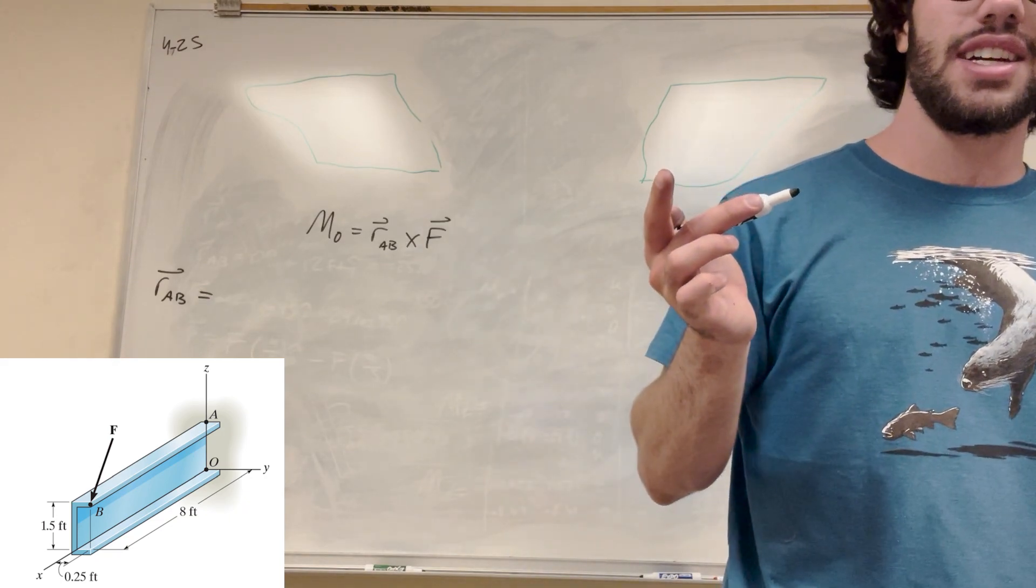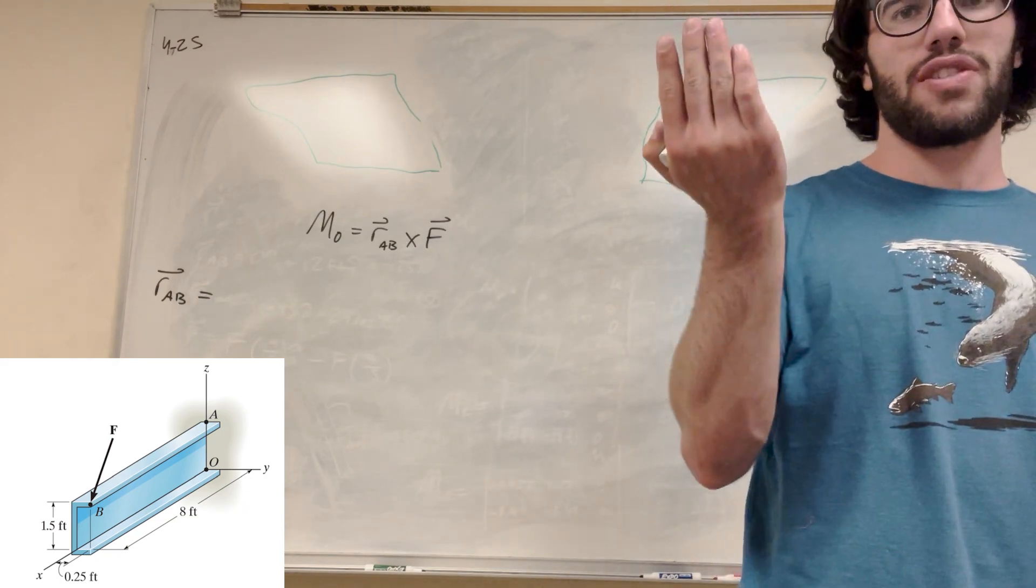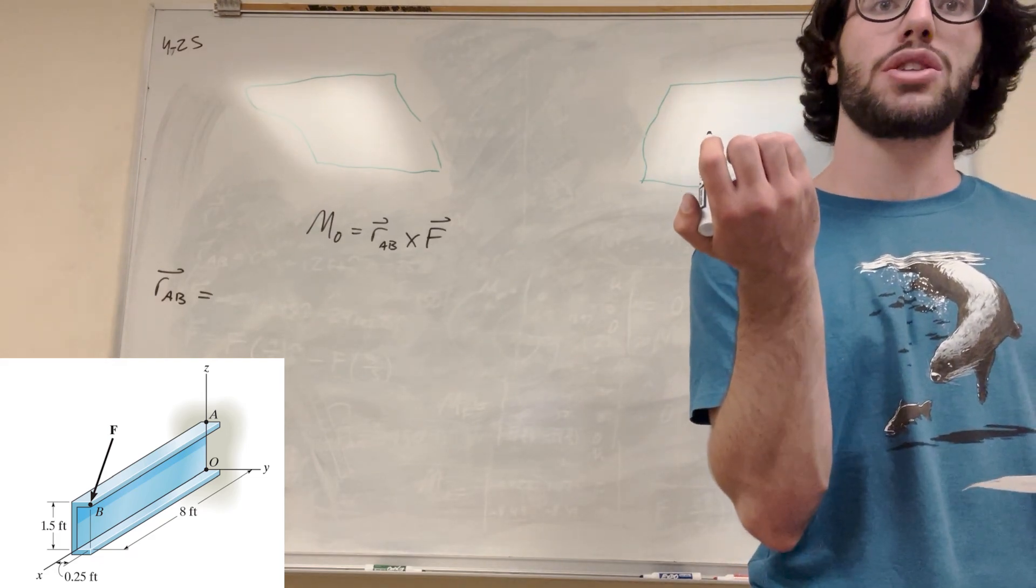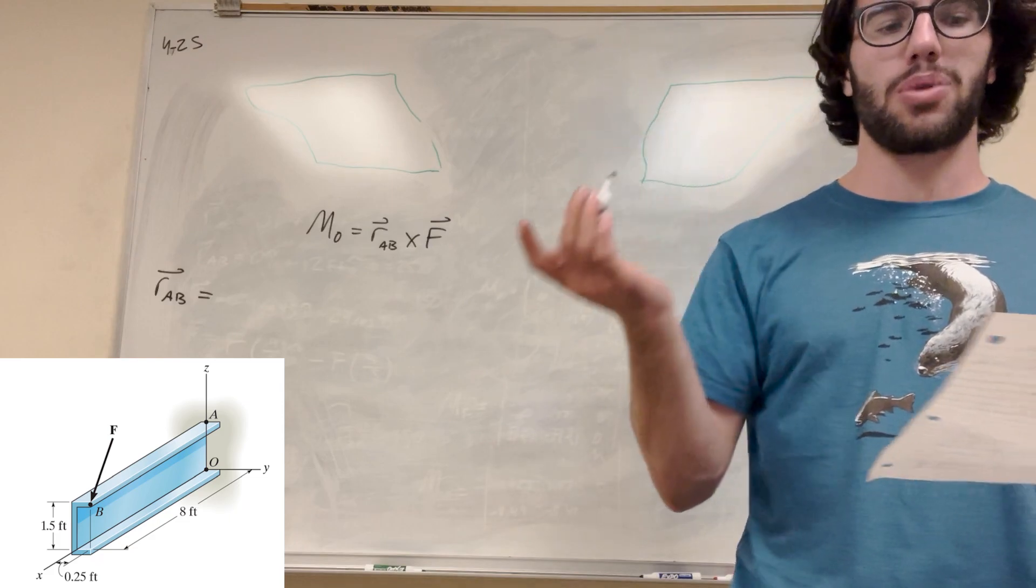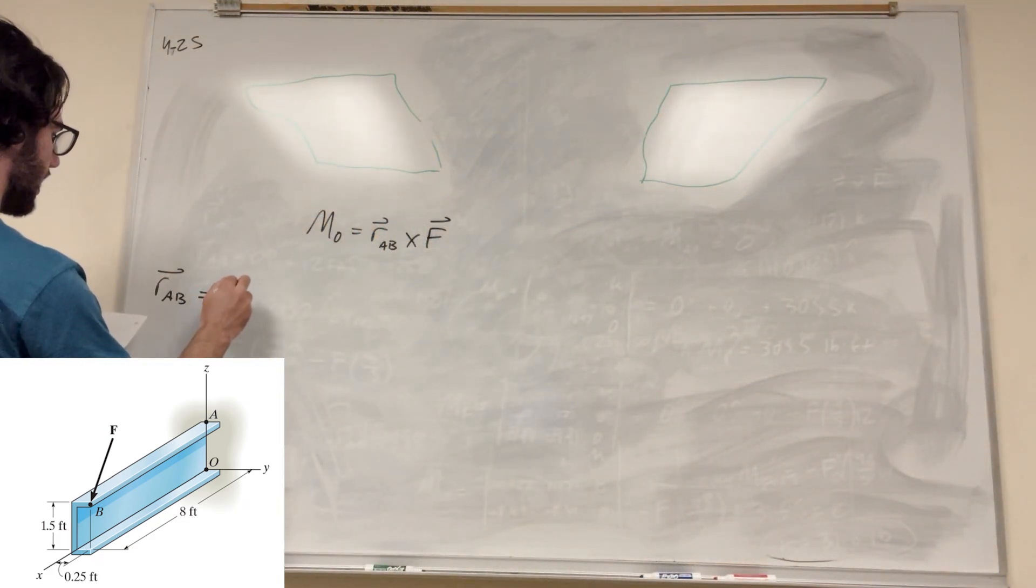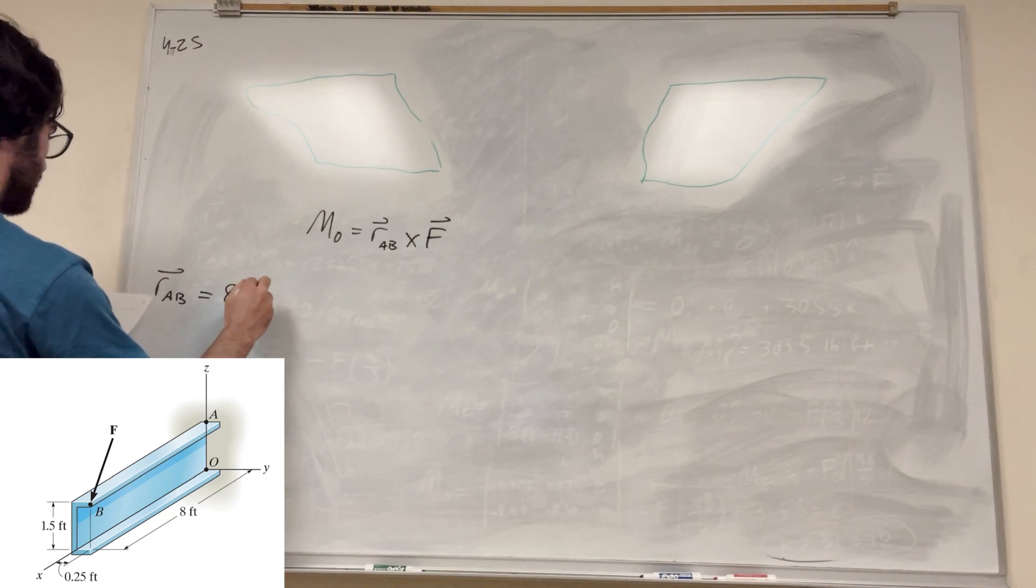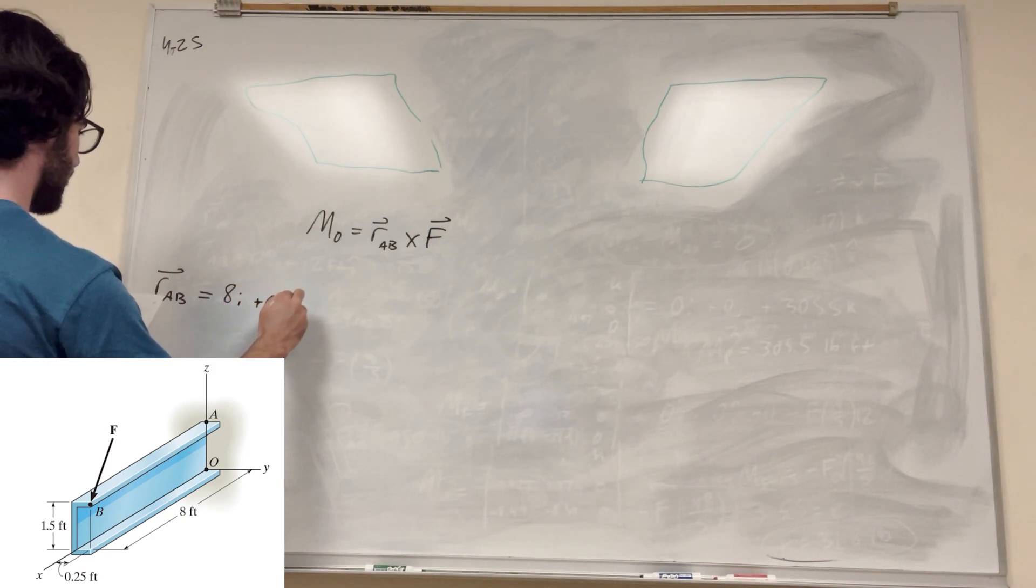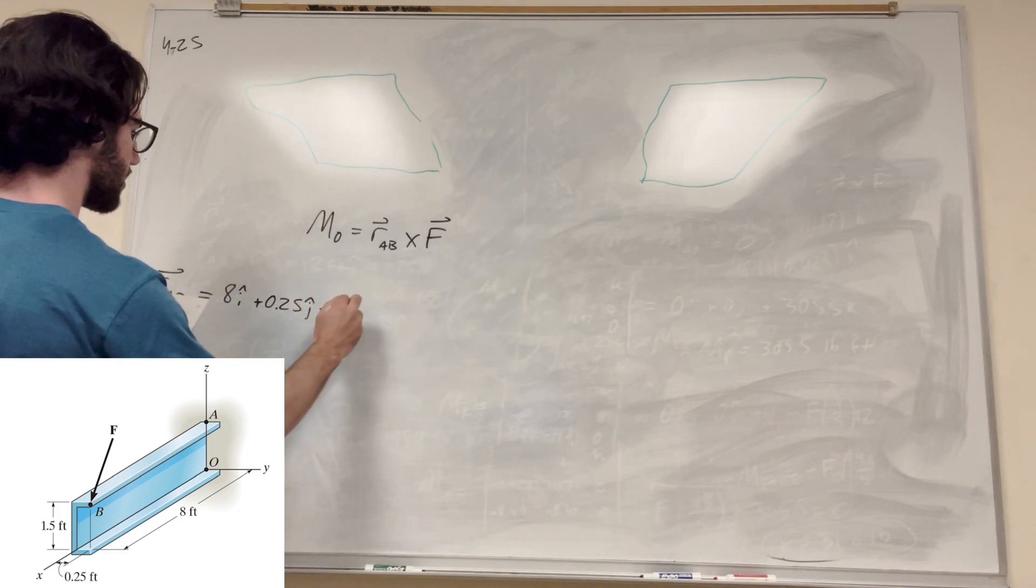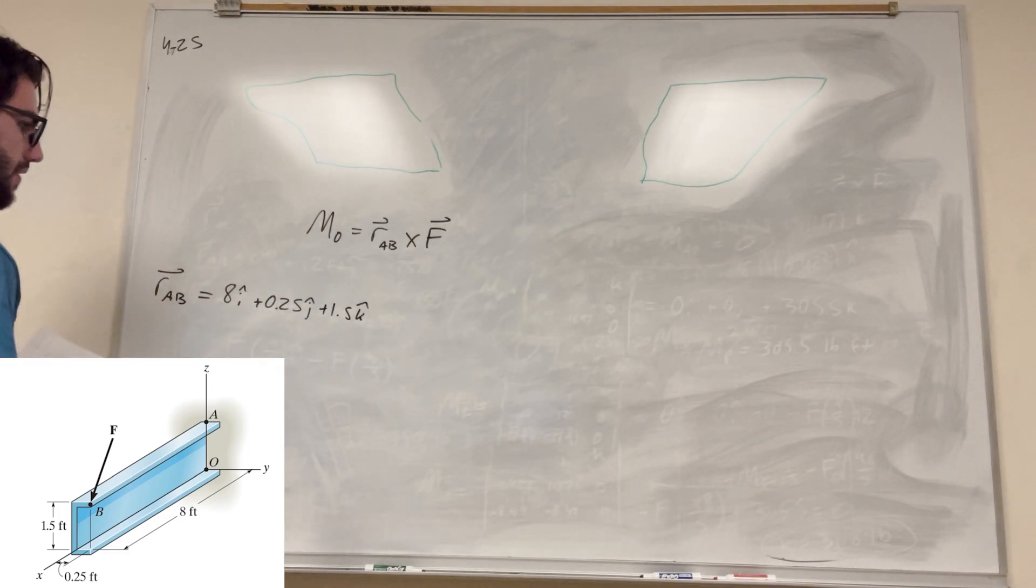It goes 8 feet in the x direction, it goes positive y 0.25 feet, and then it goes up in the z direction 1.5 feet. So it's just going to look like 8i plus 0.25j plus 1.5k. That's our position vector in feet.